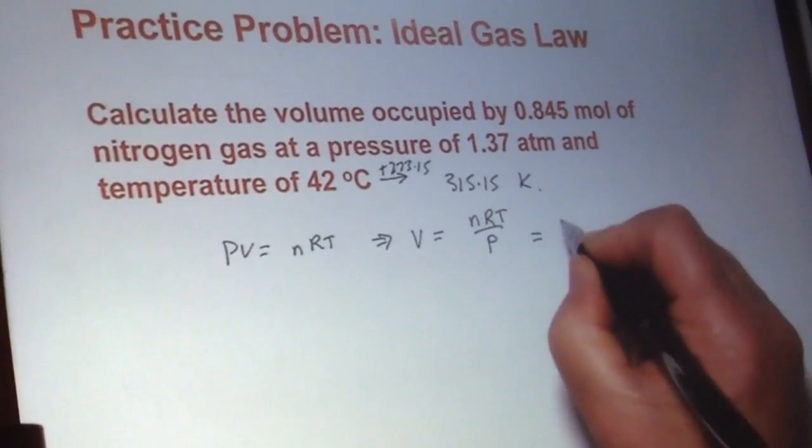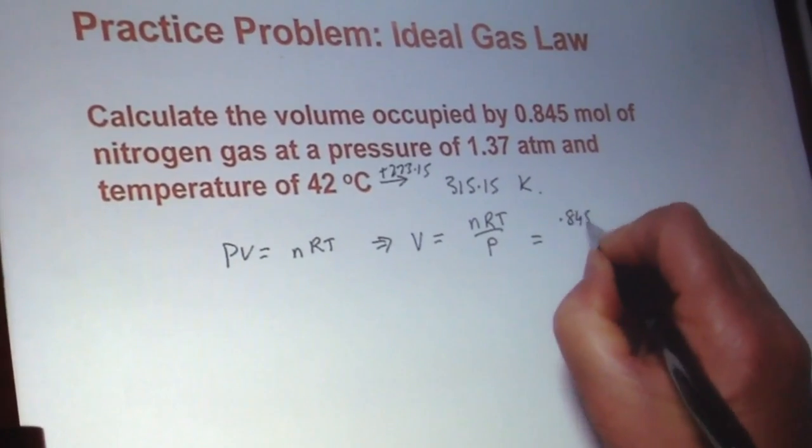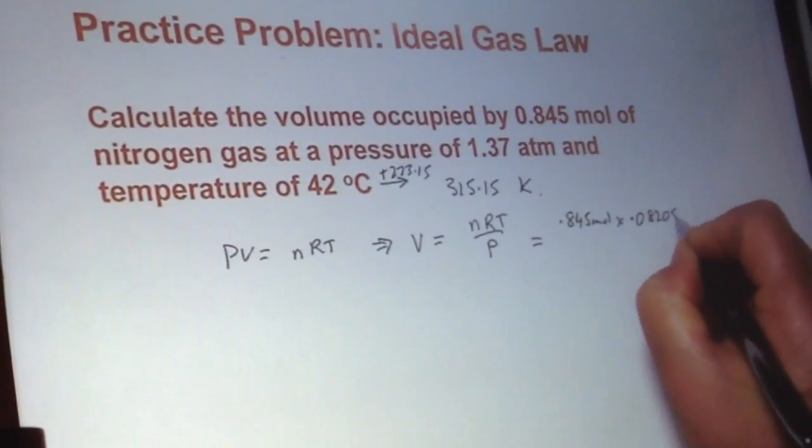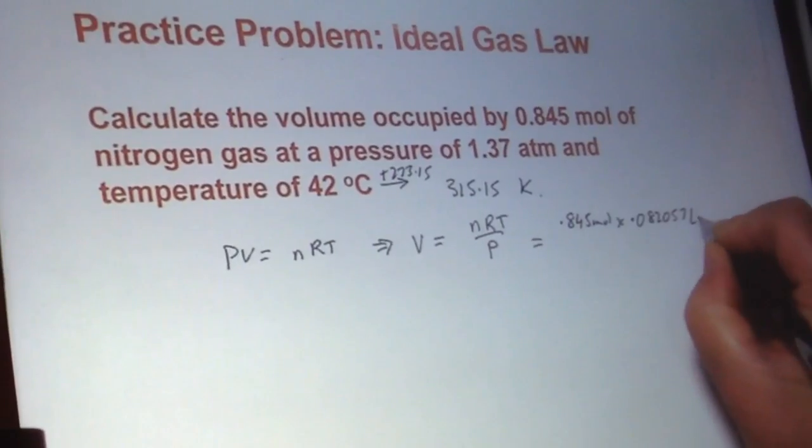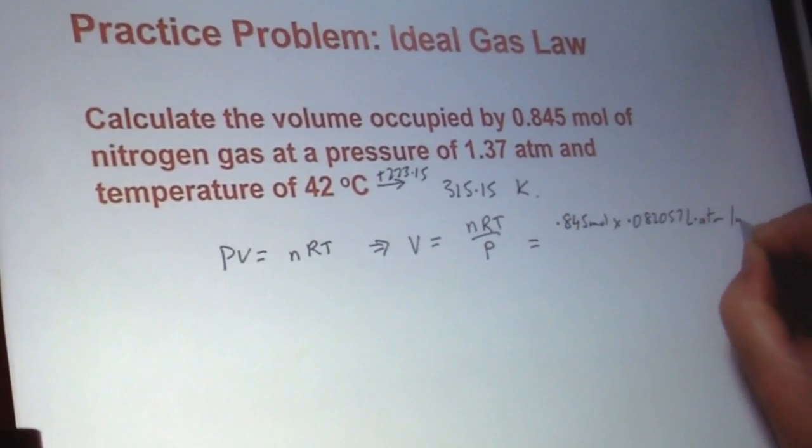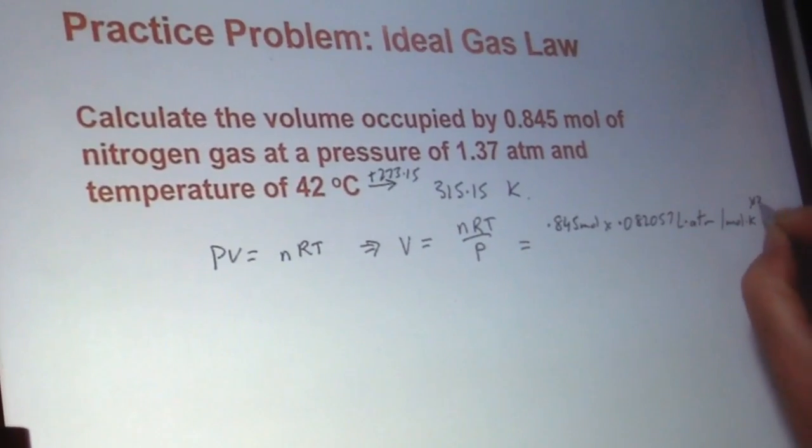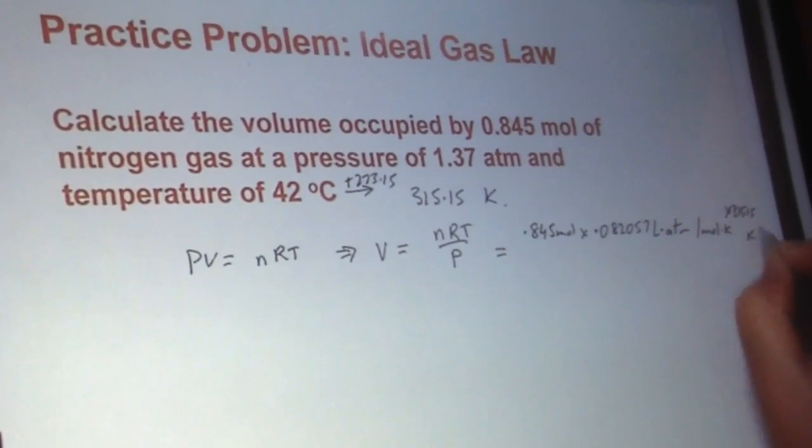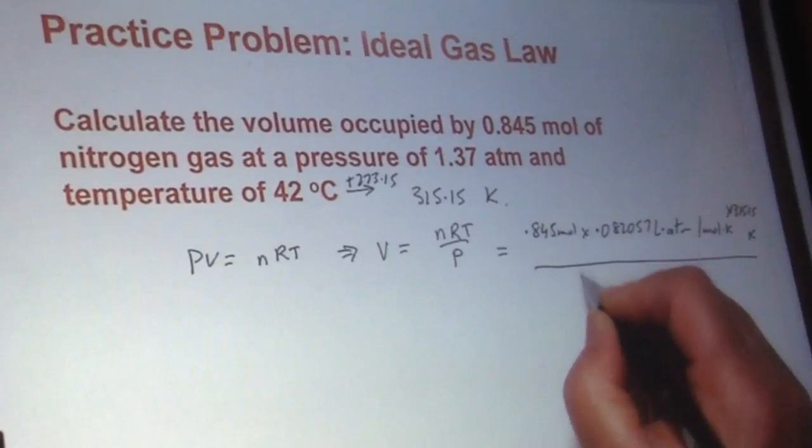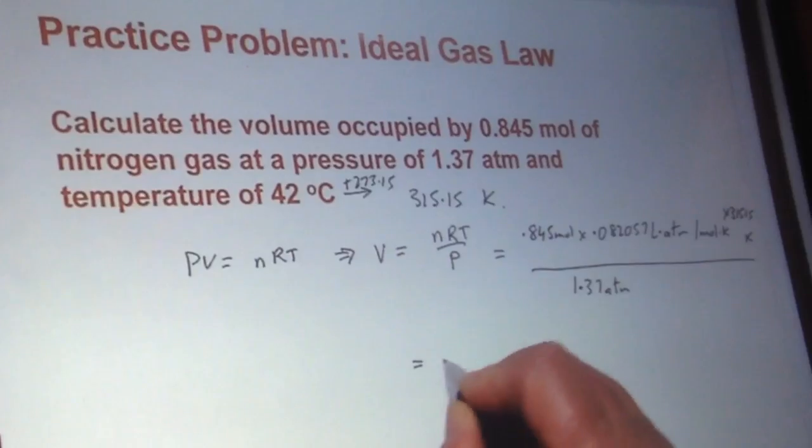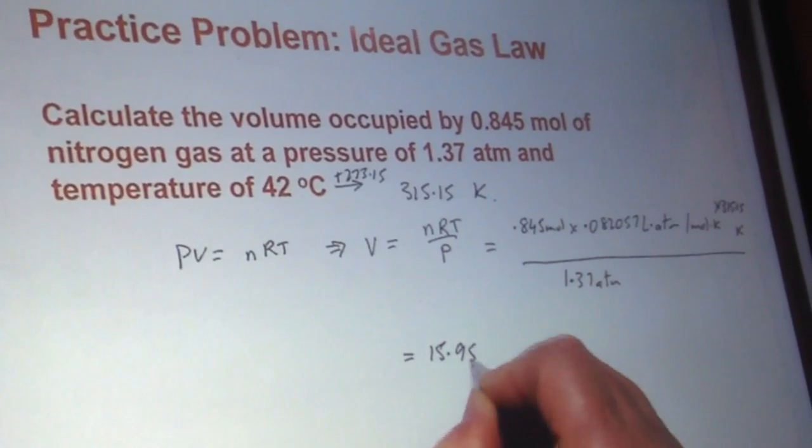Let's go ahead and put numbers in: 0.845 moles, 0.082057 litre atmosphere per mole Kelvin. We multiply by 315.15 Kelvin. On the bottom, we have 1.37 atmospheres. When we crunch the numbers, this comes out to be 15.95.